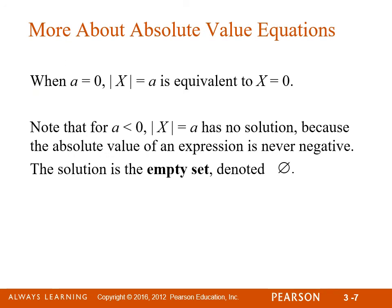When a equals 0, the absolute value of x equals a is equivalent to x equals 0, since 0 is neither positive nor negative — it's neutral. Note that when a is less than 0, the equation has no solution. You cannot have the absolute value of something equal to a negative number. For example, the absolute value of x equals negative 4 has no solution — the solution is the empty set.